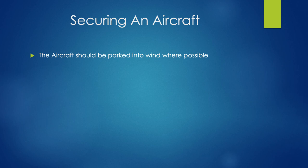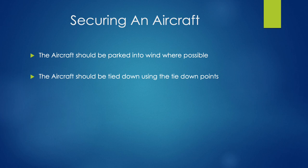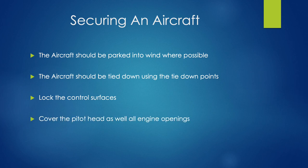Some housekeeping about securing an aircraft: we want to secure the aircraft facing into the wind if possible. We should tie it down to the floor to make sure it's not going to move around. We want to lock the control surfaces within the aircraft so they aren't free to move around. Cover the pitot tube with a cover, as well as an engine cover. If in any doubt, just refer to the pilot's handbook, where it will give the best way to do all of these things.